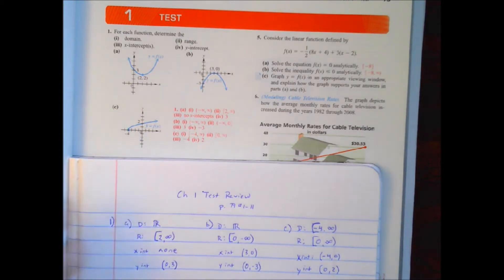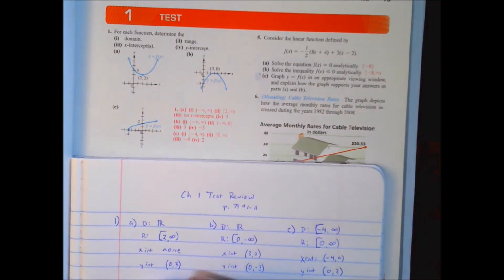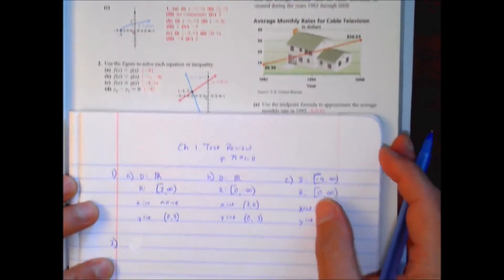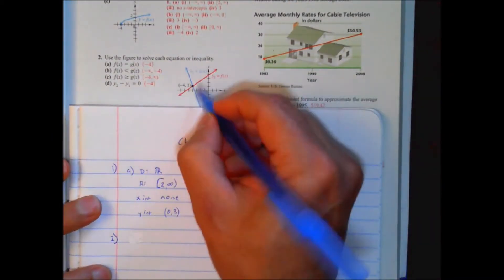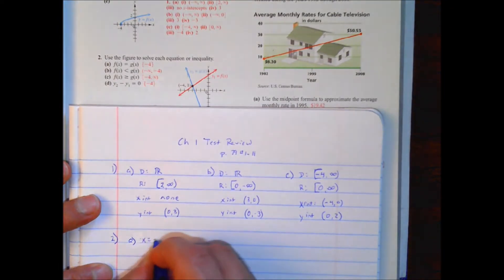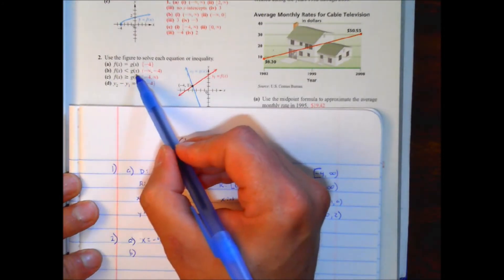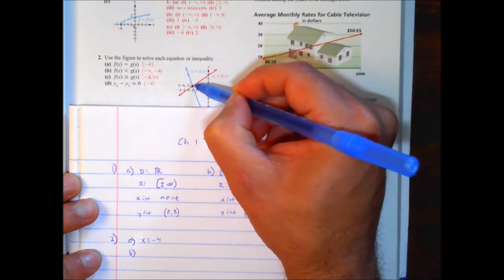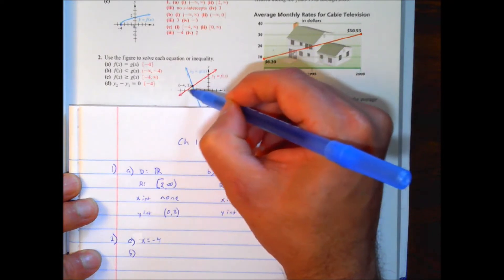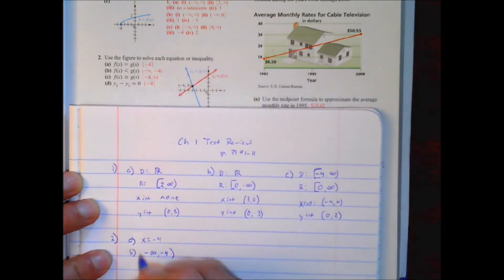Number 2 — looking at this graph, where is f(x) equal to g(x)? Right here is where they're equal, and the x is at negative 4. So part a: at x equals negative 4. Part b: where is f(x) less than g(x)? Here the f is greater — it's above; here f(x) is less — it's below. So from negative infinity to negative 4, and it's not 'or equal to,' so we use a parenthesis.